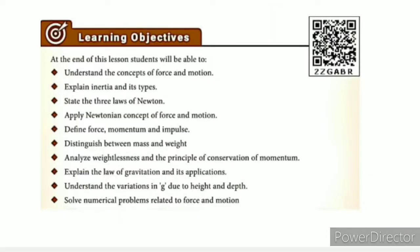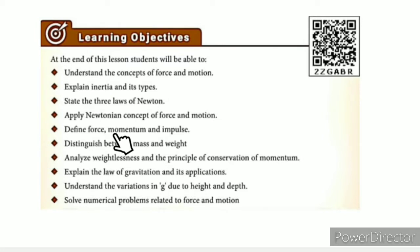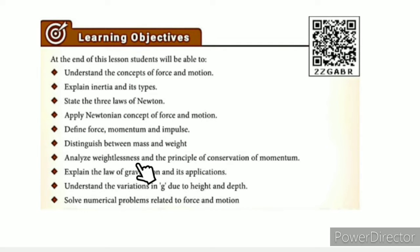In this lesson, the learning objectives are: understand the concepts of force and motion, explain inertia and its types, state the 3 laws of Newton, and the Newtonian concept of force and motion — define force, momentum, and impulse, distinguish between mass and weight, analyze weightlessness and the principle of conservation of momentum.